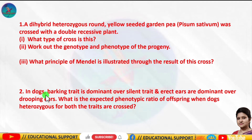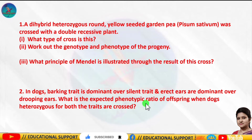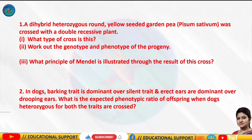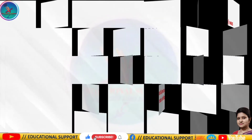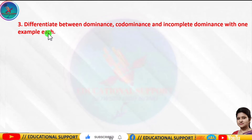Question number two: In dogs, barking trait is dominant over silent trait, and erect ears are dominant over drooping ears. What is the expected phenotypic ratio of offsprings when dogs heterozygous for both traits are crossed?